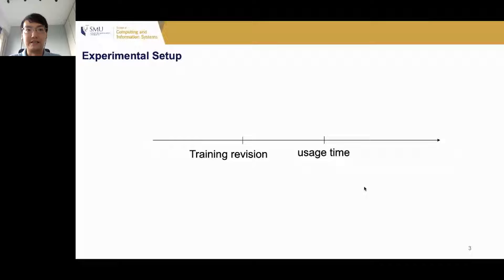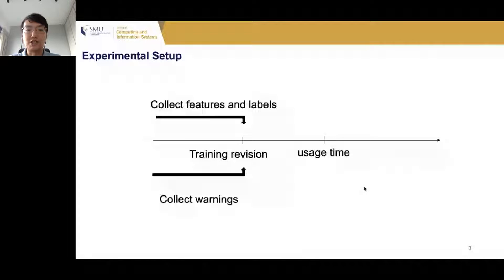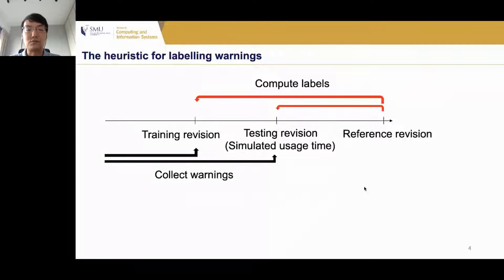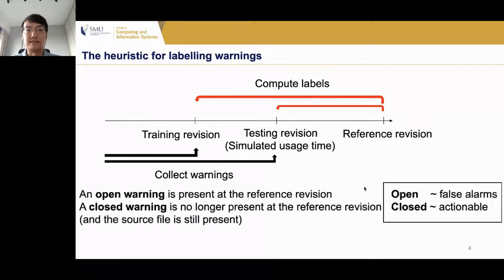To construct datasets for such experiments, we need training and testing data. We identify a revision of a project as the training revision, collect warnings, compute features, and obtain labels for each warning. To determine the ground truth label of a warning, prior work proposed a heuristic that compares warnings at the training revision against a reference revision. An open warning is one present at both the training revision and the reference revision, while a closed warning was present at the training revision but is no longer present at the reference revision even though the source file still exists.